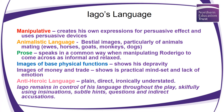Finally, Iago uses anti-heroic language. His language is plain, direct, and understated. He remains in control of his language throughout the play — it doesn't change, again in contrast to Othello. He uses insinuations, subtle hints, questions, and indirect accusations. For those studying A-Level language, it would be interesting to look at the way he uses tag questions and other linguistic devices to ultimately change Othello's mindset.